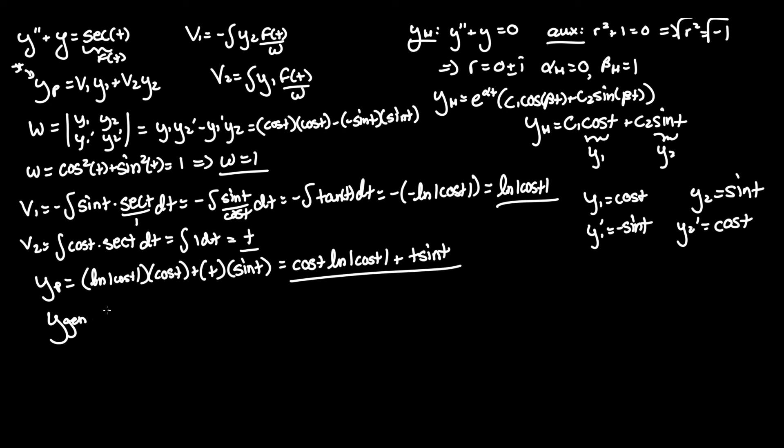And as you know, the general solution is always y homogeneous plus y particular. Let's just add up our two solutions. We can use y homogeneous from up here and just add that to here and we're done: c1 cos t plus c2 sin t plus cos t ln absolute value of cos t plus t sin t.